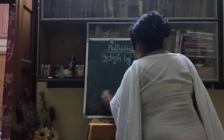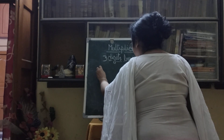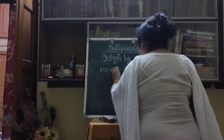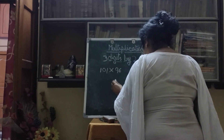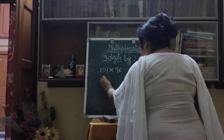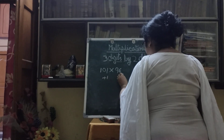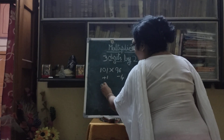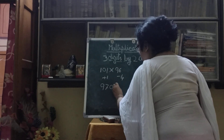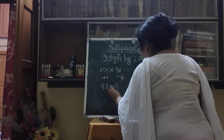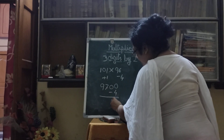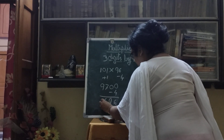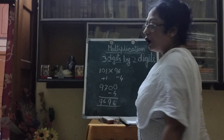Let us do one more: 101 multiplied by 96. Here how much more — plus 1. And here minus 4. Wait, here minus 6 actually. So 96 plus 1 is 97, then add two zeros: 9700. And 1 multiplied by 6 is 6. We subtract: 9700 minus 4 is 9696. So 9696 is your answer.